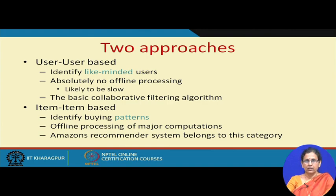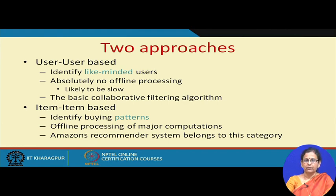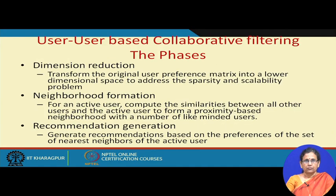This is the basic collaborative filtering, but the corresponding commercial application is a bit different. In item-item based, similarity between items is computed based on users' buying patterns — this computation is done offline. Then, whenever a user comes and looks at an item, that similarity matrix is used to suggest items. In fact, Amazon in a commercial setting first started this particular item-item based recommendation. Whether item-item or user-user, a few steps are followed.